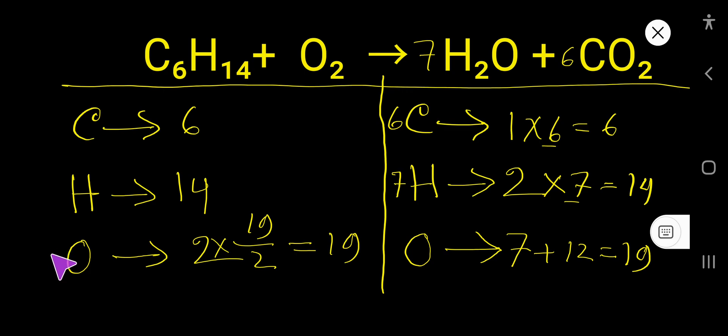So we have to multiply this oxygen by 19 over 2. You have to place 19 over 2 here, but we don't usually use fractions as coefficients.